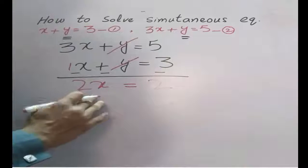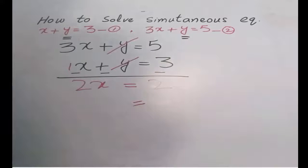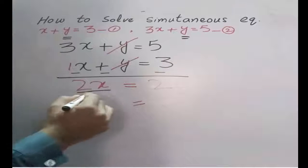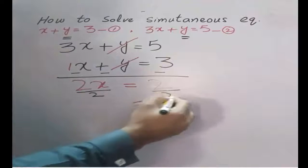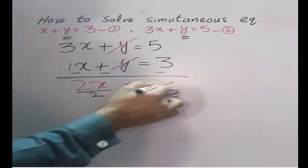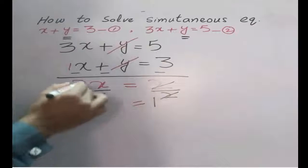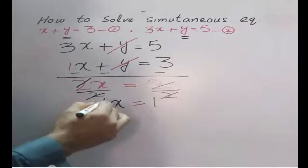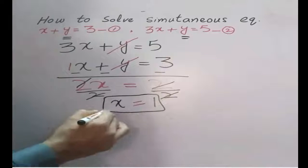So divide both sides by 2, the coefficient of x. 2 divided by 2 equals 1. So the value of x is equal to 1.